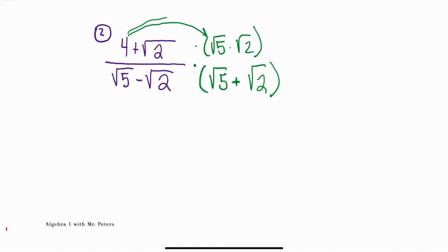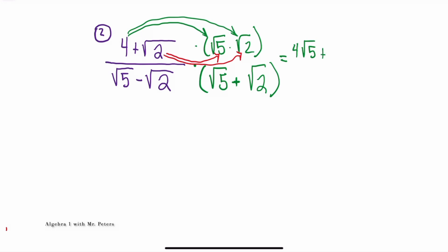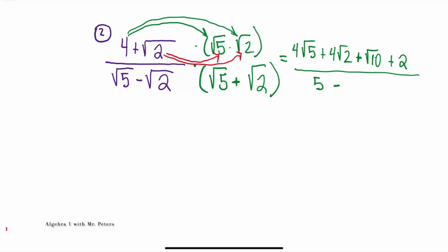When we focus on the numerator, remember that we're going to distribute 4 to both radical 5 and radical 2, and then we're going to go back to radical 2 and do the same thing — so yes, we are FOILing. When we simplify one step further, in our numerator we're going to have 4 radical 5 plus 4 times radical 2. Then when we go to radical 2 and distribute, we're going to have radical 10 plus 2. Down in the denominator, this is the same concept as the difference of squares, so it simplifies to 5 minus 2.